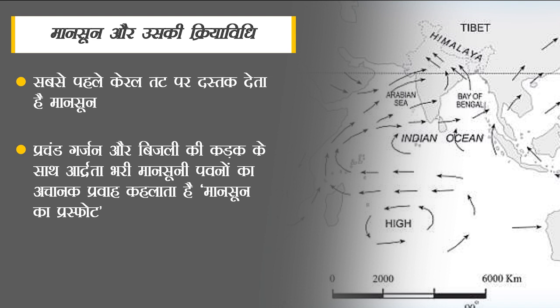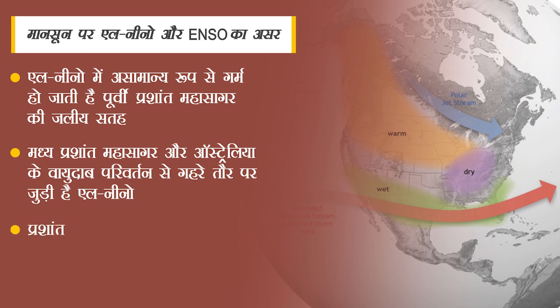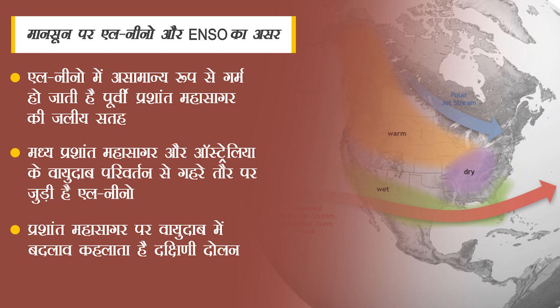मौसम मापक यंत्रों की गणना के मुताबिक अगर 90 फीसदी से कम बारिश होती है तो उसे कमजोर मानसून कहा जाता है। अब बात करते हैं भारतीय मानसून पर El Niño और ENSO के असर की। मानसून पर El Niño और La Niña का काफी गहरा असर पड़ता है। El Niño एक महासागरीय परिघटना है जो हर 5-6 साल के बाद आती है।